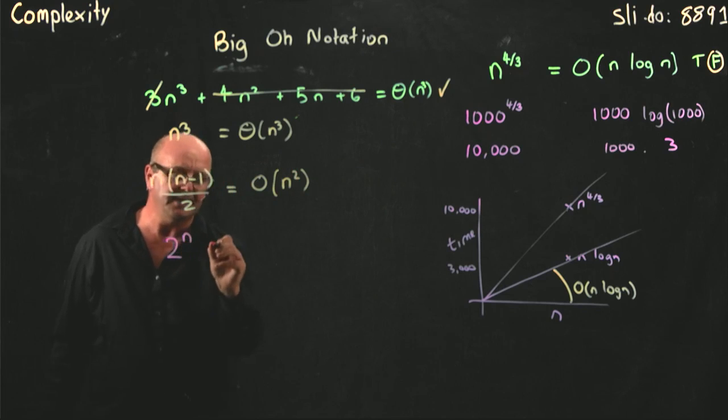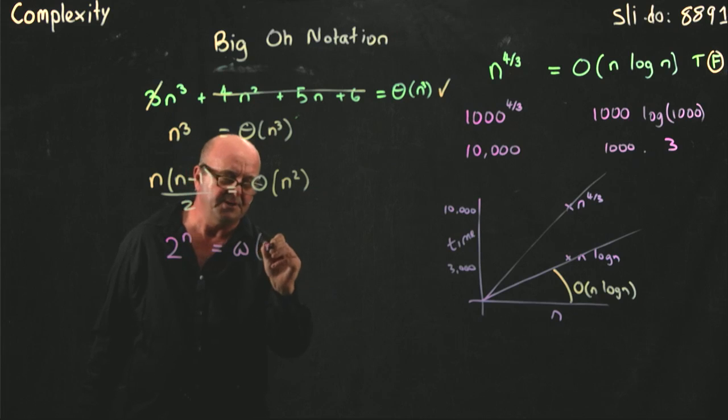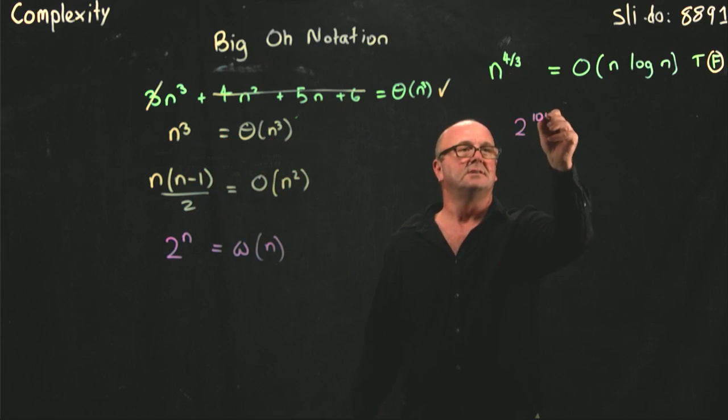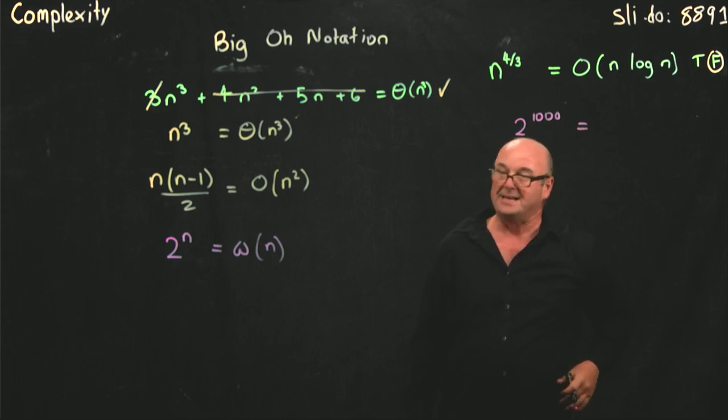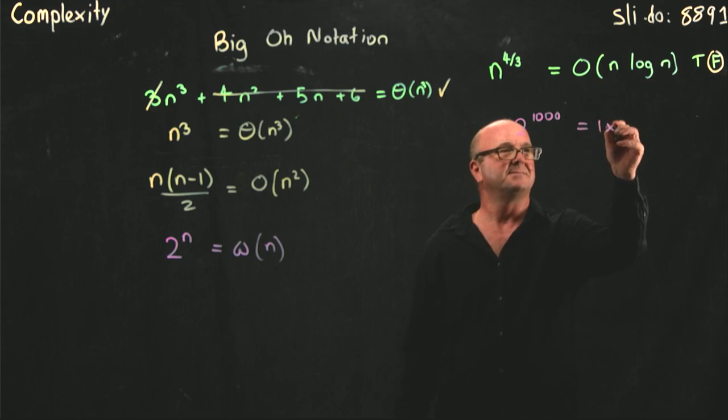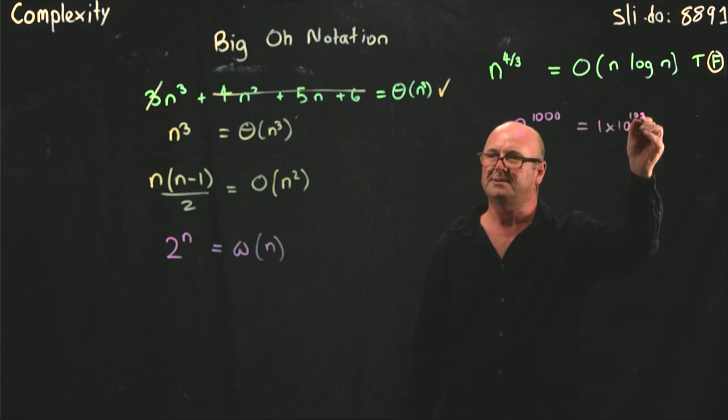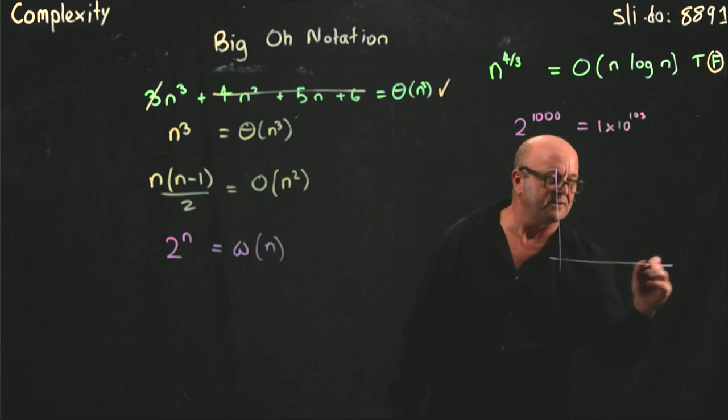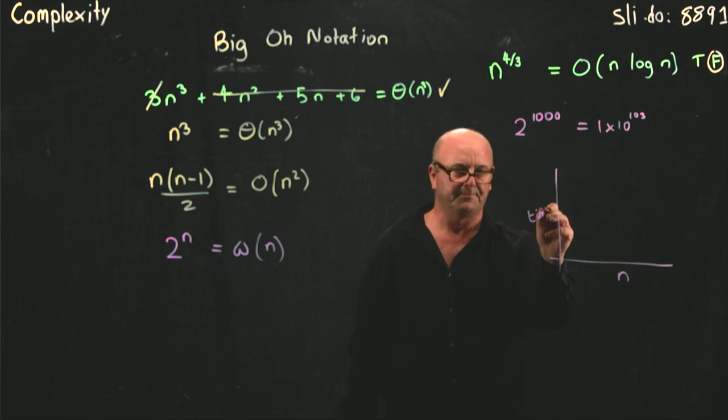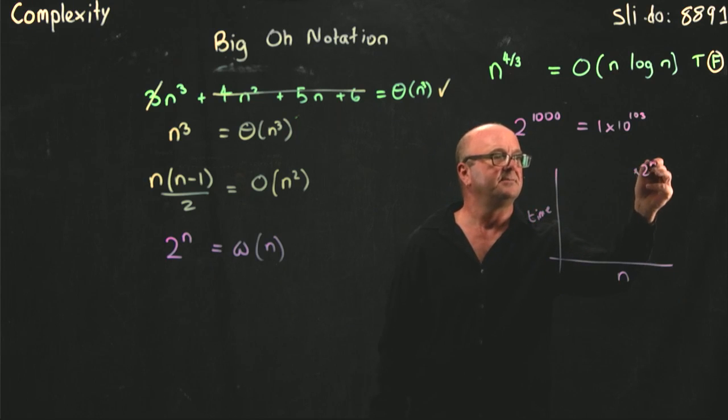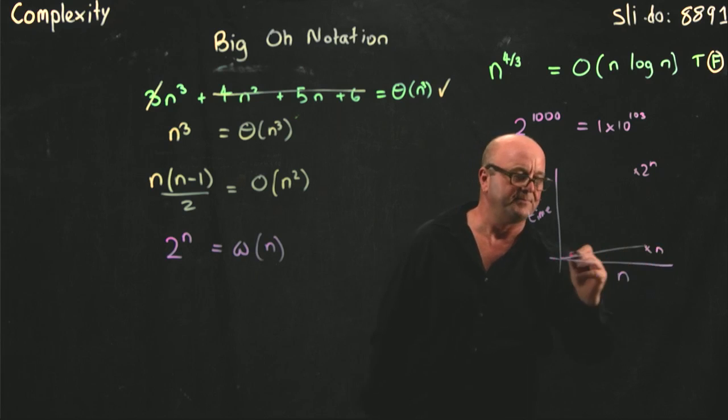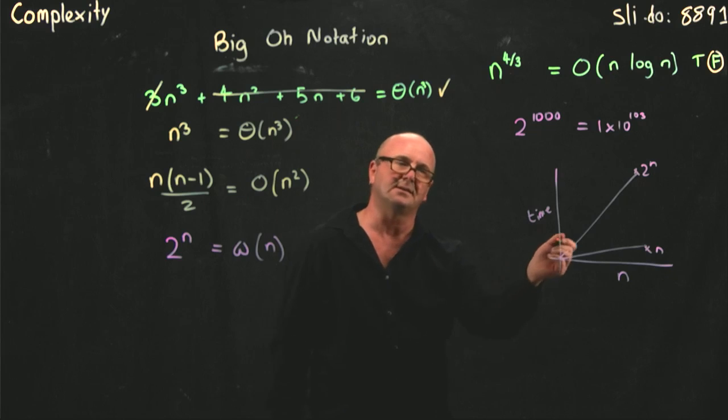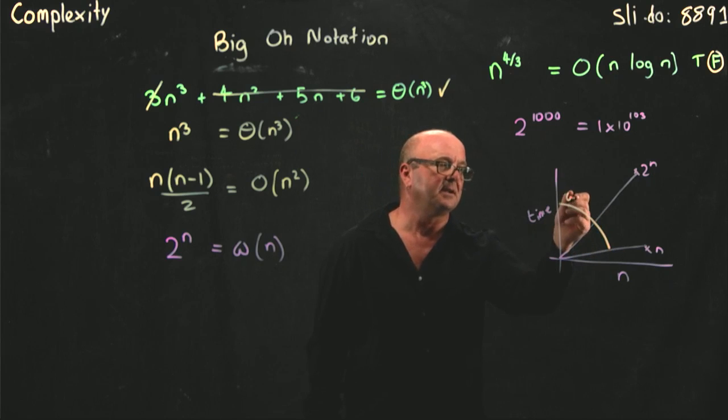What about 2 to the n, compared to omega of n? True or false? Let's take a big number. What's 2 to the 1,000? It's really big, right? It's like 1 times 10 to the 103 or 130. And n is 1,000. So, again, if we were to plot our graph with n and time, 2 to the n would be up here, n would be way down here. And then, you just have to remember where on the graph our different areas are. So, here we have little omega of n.